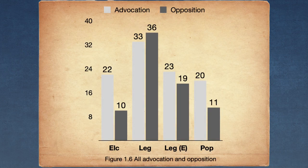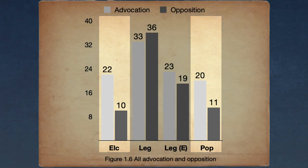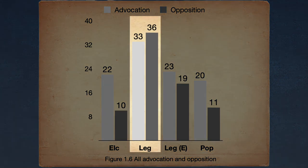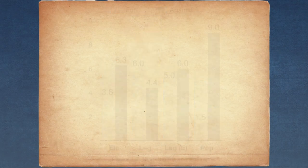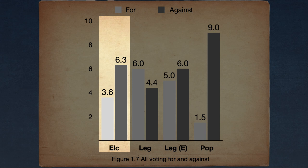In terms of debating, the elector method and the popular vote both held ratios of two advocations to one opposition, while the legislature method was roughly split. Concerning voting, however, the legislature method performed the best, as it averaged 6 states voting for and 4.4 states voting against. The electors method fared poorly, only averaging 3.6 states voting for and 6.3 states voting against the method.